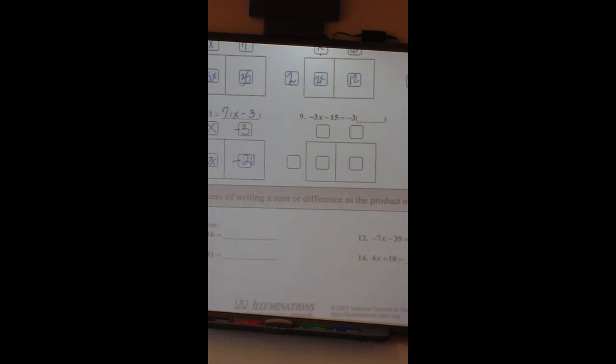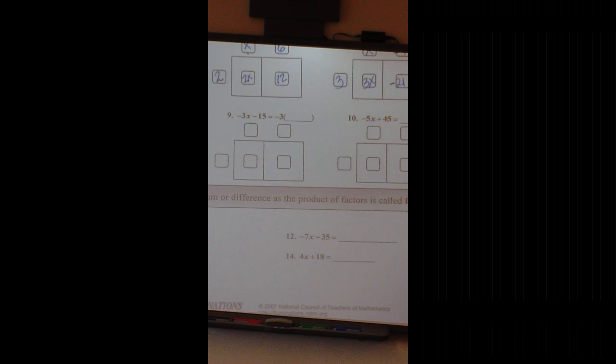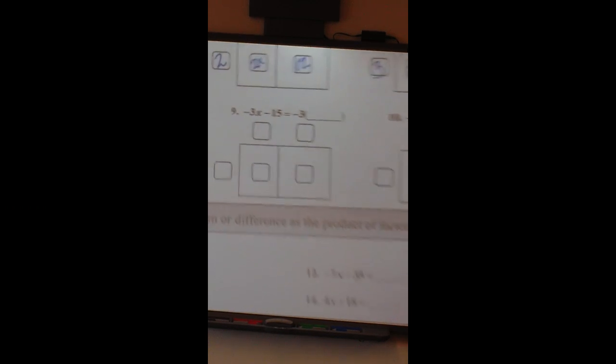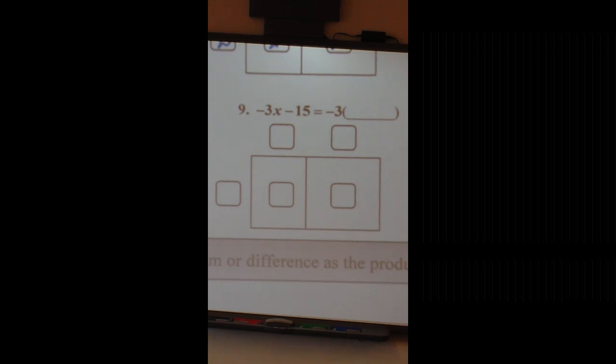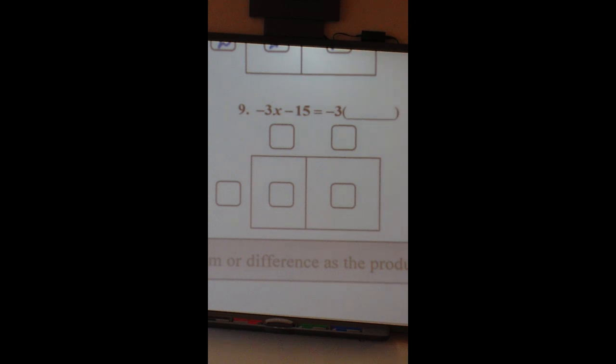All right, number nine. Scary. All right, this one is negative 3x minus 15. Let me give you guys a verbal hint. A negative times a negative is going to be positive. A negative times a positive is a negative. So keep that in mind when you're thinking about filling these boxes out.